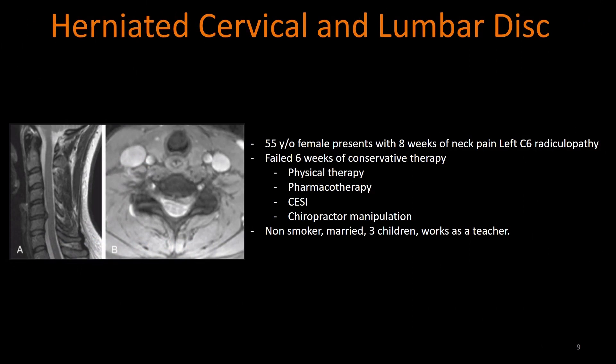Here are some not uncommon examples. This is a 55-year-old female who presents with eight weeks of neck pain and left C6 radiculopathy. She had failed six weeks of conservative therapy — she had physical therapy, exhausted her pharmacotherapies, had a cervical injection, and underwent chiropractic manipulation. She's a non-smoker, she's married, she has three children, and she works as a teacher. You can see on the sagittal and axial MRI cuts the left paracentral disc herniation at C5-C6.